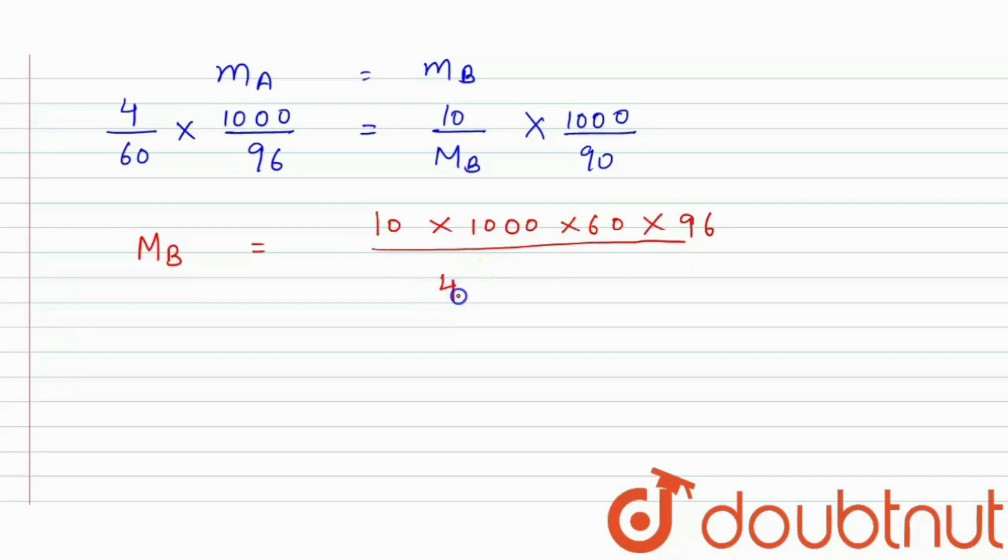Upon 4 into 1000 into 90. So, 1000 will be cancelled out with 1000. 4 will be cancelled out with this as 15. So, here, it will be 9. And, after solving it, we will get the molecular mass of B is equal to 160 gram per mole. And, this is our answer.